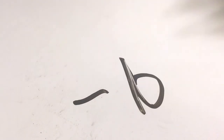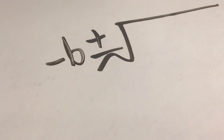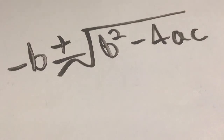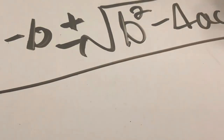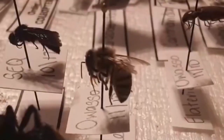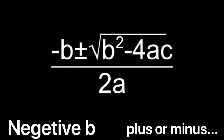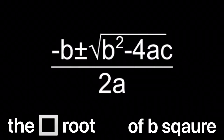The quadratic formula is negative b, plus or minus the square root of b squared minus 4ac, all over 2a. Negative b, plus or minus the square root of b squared...